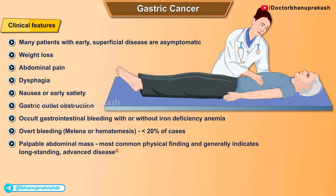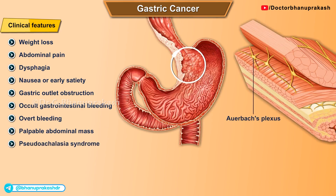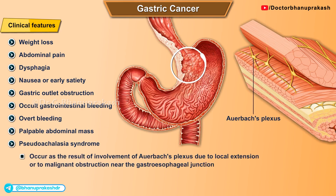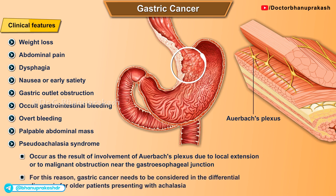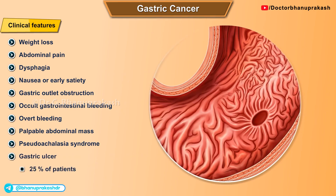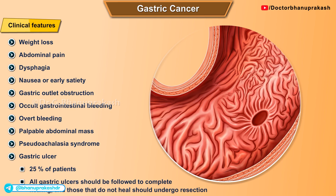The presence of a palpable abdominal mass is the most common physical finding and generally indicates long-standing advanced disease. A pseudo-achalasia syndrome may occur due to involvement of Auerbach's plexus from local extension or malignant obstruction near the gastroesophageal junction. For this reason, gastric cancer should be considered in the differential diagnosis for older patients presenting with achalasia. Approximately 25 percent of patients have a history of gastric ulcer, and all gastric ulcers should be followed to complete healing; those that do not heal should undergo resection.